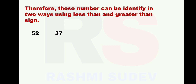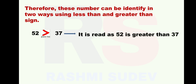Let us see how. We have written the numbers as 52 and 37. Here, on the left hand side it is 52 and on the right hand side it is 37. You know 52 is the greater number and 37 is the smaller number. So which sign will come here? Greater than sign. So put the greater than sign. How are you going to read this? 52 is greater than 37.